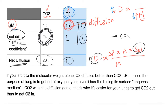Life is only possible within a very narrow range of pH change: between 7 and 7.7. Less than 7, you die from acidosis. More than 7.7, you die from alkalosis. Be thankful that the diffusion coefficient of CO₂ is greater than that of oxygen; otherwise you'd have died of acidosis.